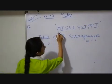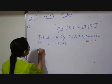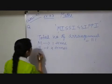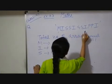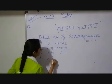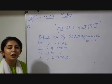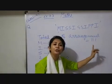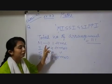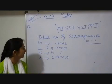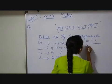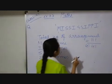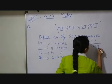Now: M appears only once — no need to write it in denominator. I appears 4 times, so 4 factorial in denominator. S appears 4 times, so another 4 factorial. P appears 2 times, so 2 factorial. Therefore, total arrangements = 11 factorial upon (4 factorial × 4 factorial × 2 factorial).